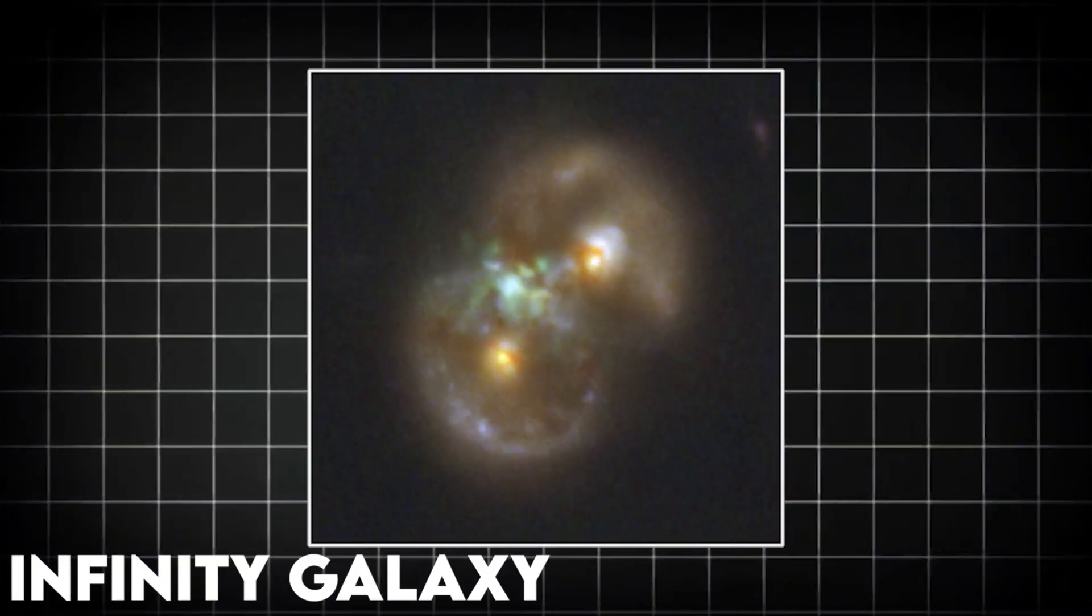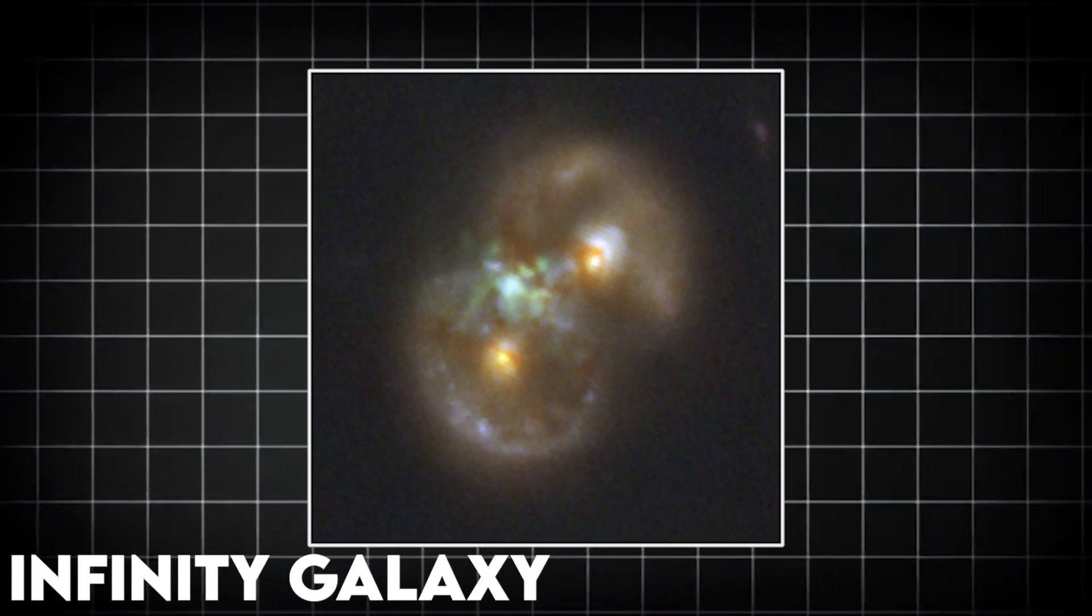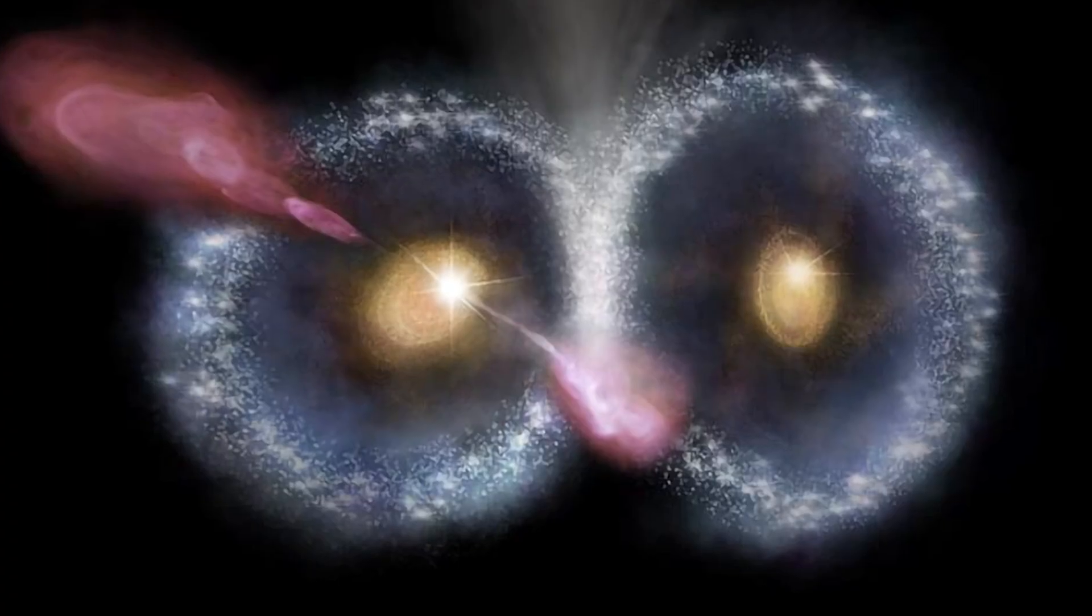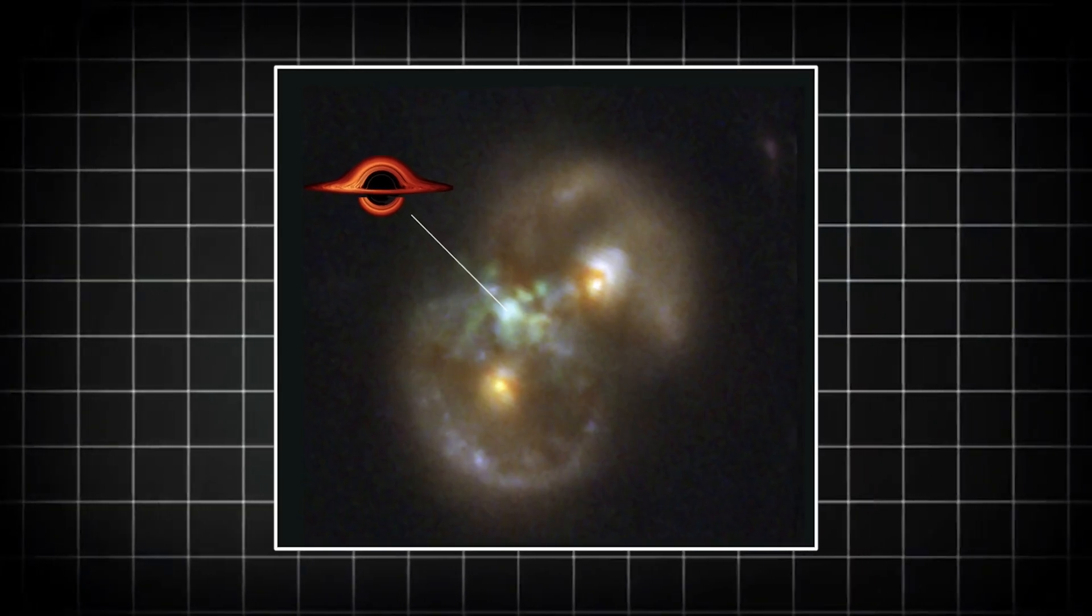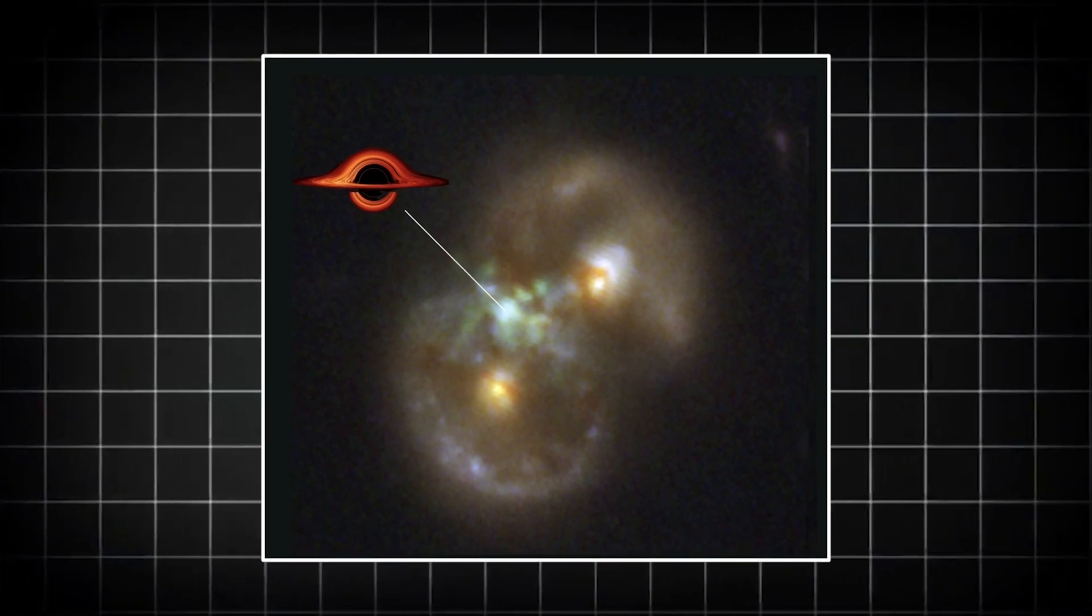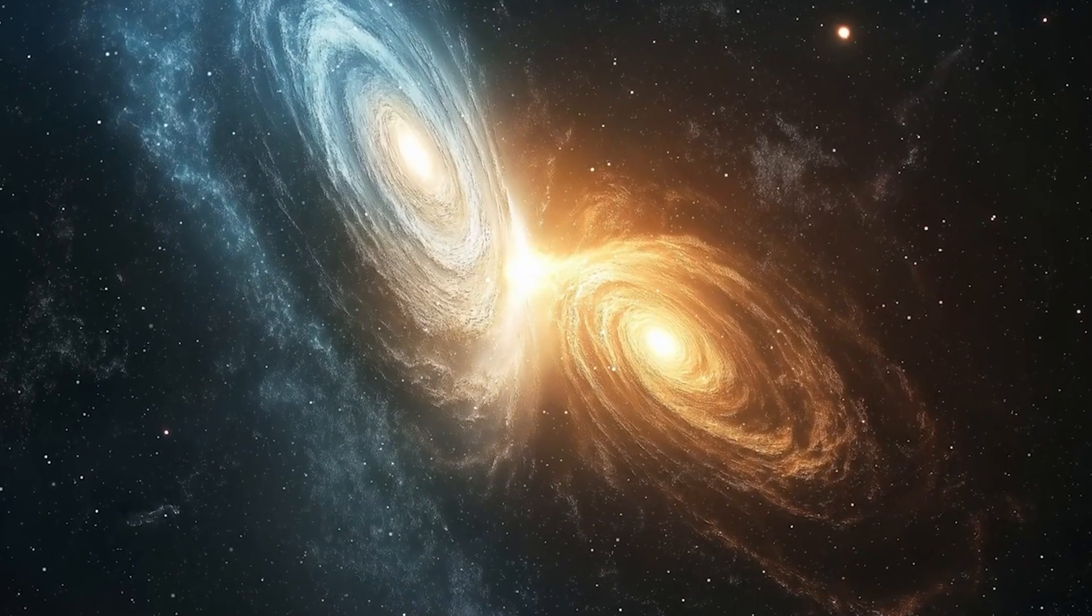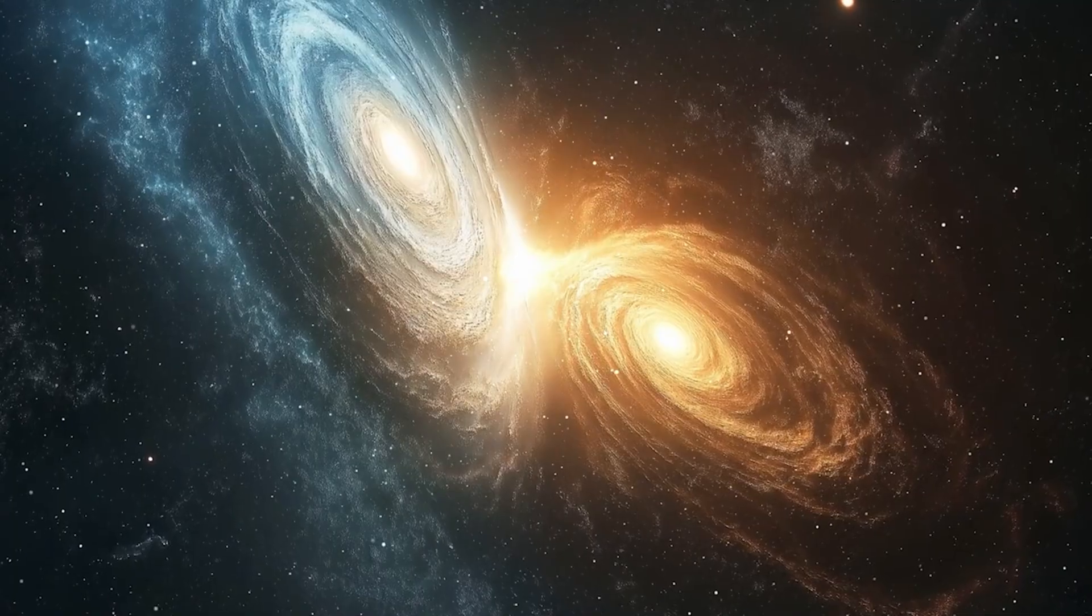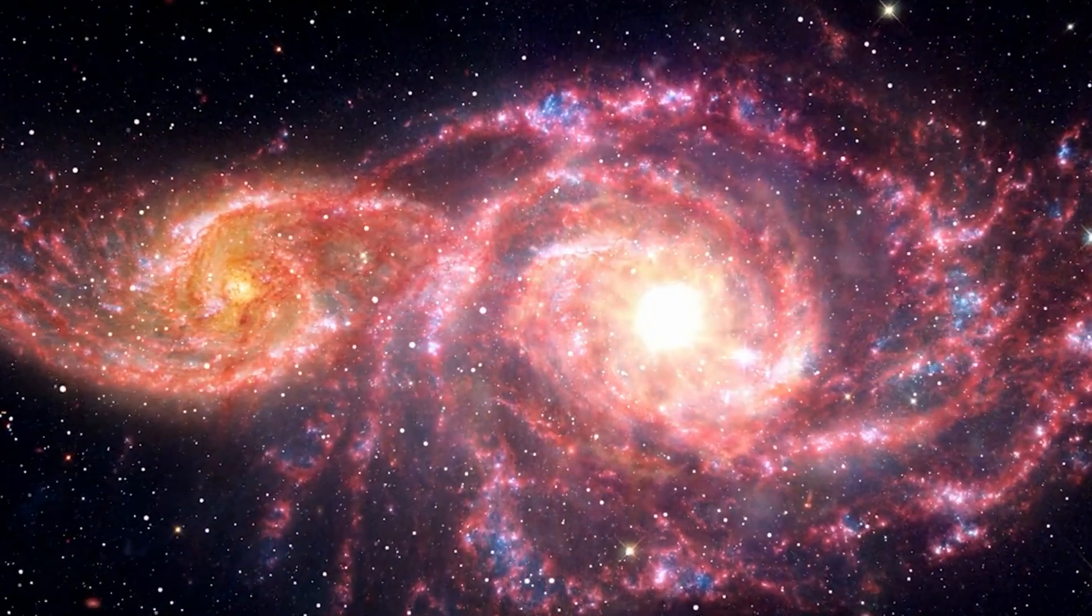And then there's the show stealer, the so-called Infinity Galaxy: two galaxies colliding so perfectly they form a glowing figure eight, like the universe briefly tried its hand at abstract art. Even more astonishing? A supermassive black hole seems to be forming not inside either galaxy, but smack in the middle of their celestial collision zone. That's like finding a volcano forming in the space between two islands. Astronomers are understandably losing their minds, in a very professional, peer-reviewed way.